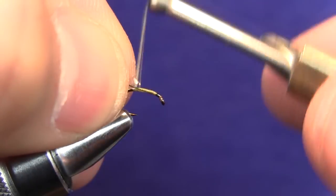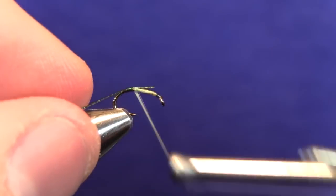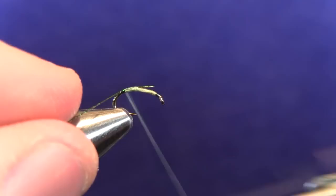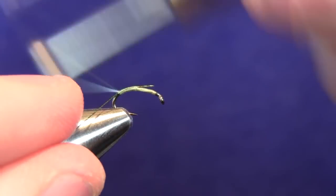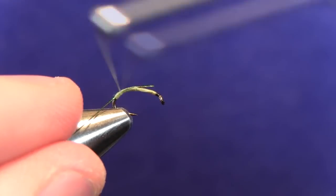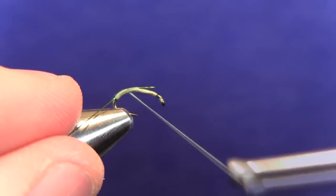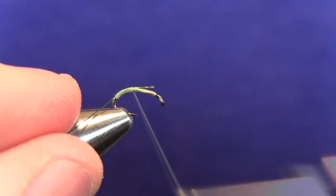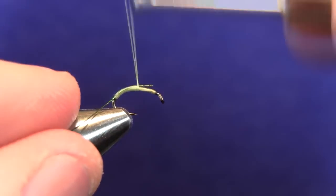Next we're going to take our sulky metallic thread and tie that material in right there at the halfway point, and we're just going to make nice even thread wraps all the way down to the curvature of the bend there. And then we'll just make even wraps back up towards that midpoint right there on the shank of the hook.